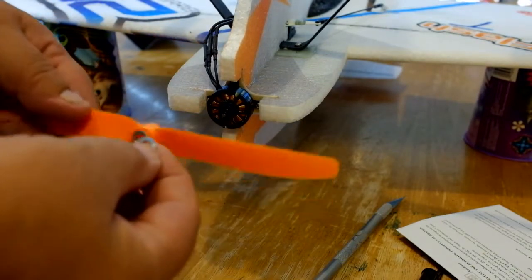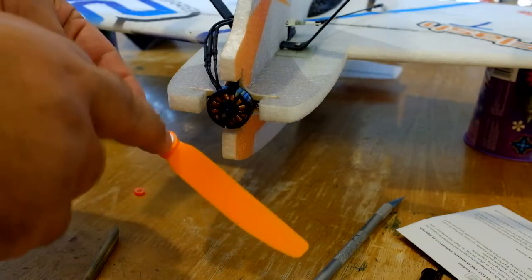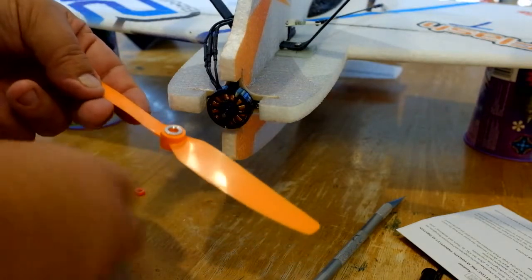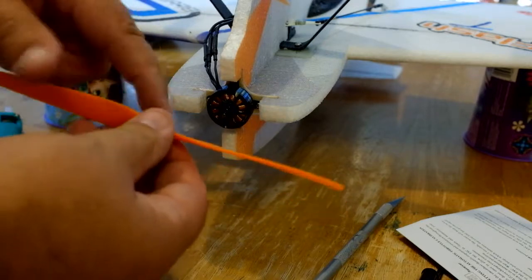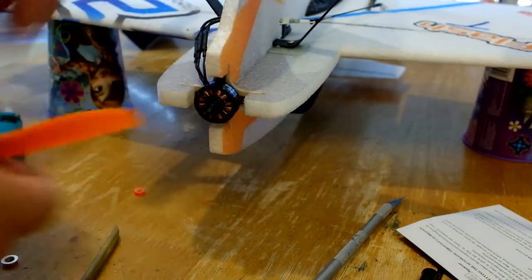Your motor is going to come with two spacers, depending on which kind of prop you're going to use. This is a direct drive prop. One of them is going to fit in your propeller. It goes in the back, fits tight, and it slips over the end of the motor and keeps everything nice and flat.